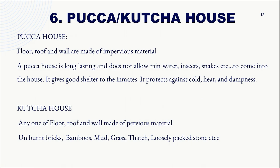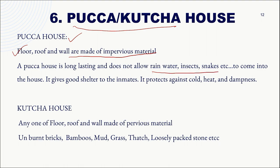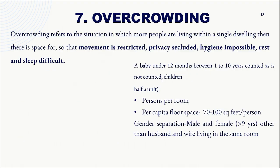Regarding house types: a pakka house has floors, roof, and walls all made of impervious material. It lasts long, prevents rainwater, insects, and snakes from entering, provides good shelter, and protects from cold, heat, and dampness. A kaccha house has floors, roof, or walls made of pervious material — such as unburnt bricks, bamboos, mud, grass, thatch, or loosely packed stone.